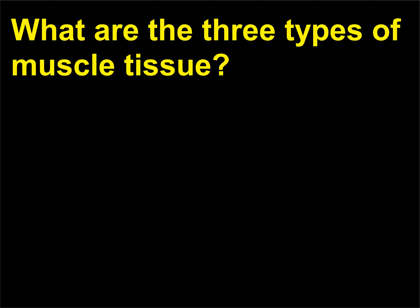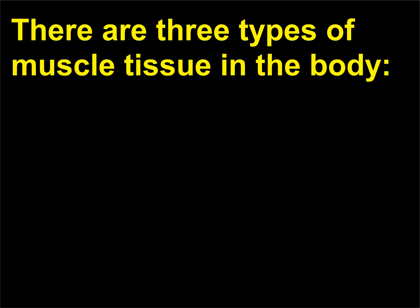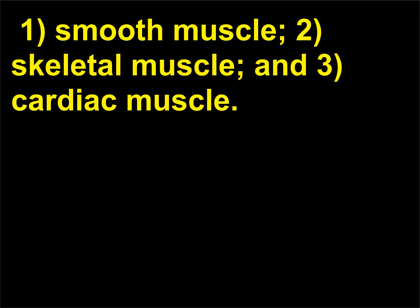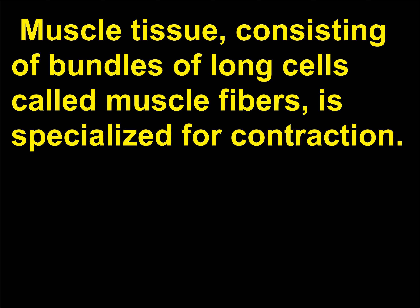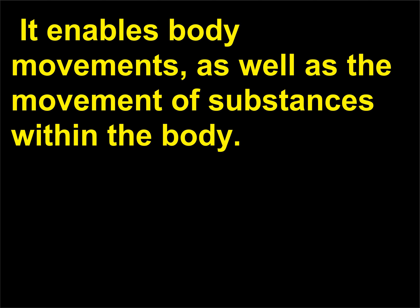What are the three types of muscle tissue? There are three types of muscle tissue in the body: 1. Smooth muscle, 2. Skeletal muscle, and 3. Cardiac muscle. Muscle tissue, consisting of bundles of long cells called muscle fibers, is specialized for contraction. It enables body movements, as well as the movement of substances within the body.